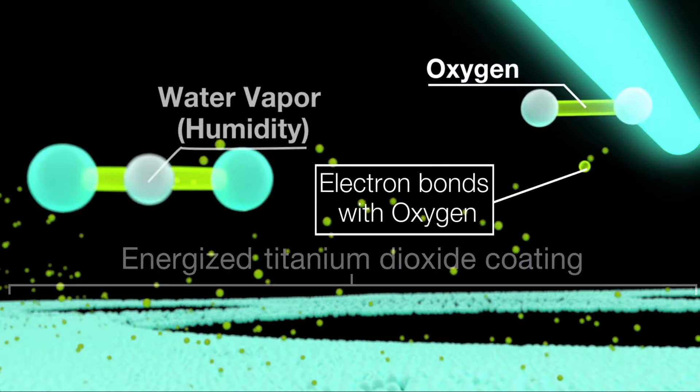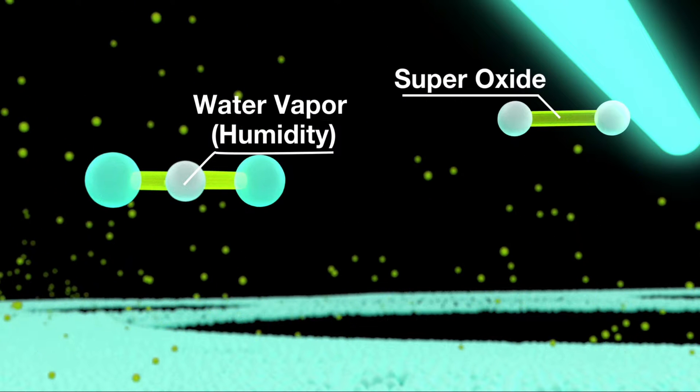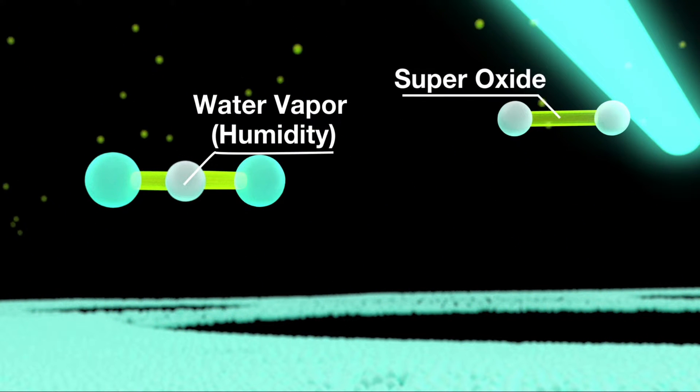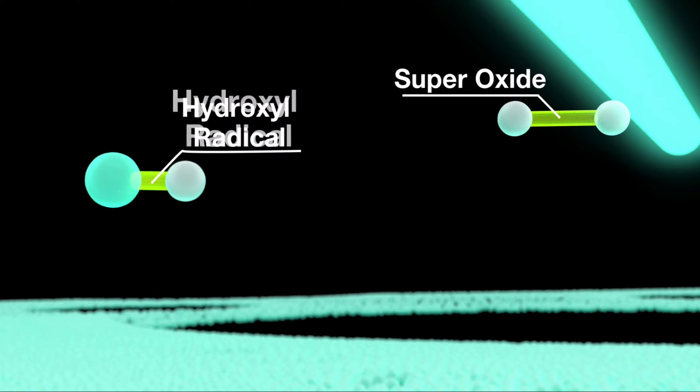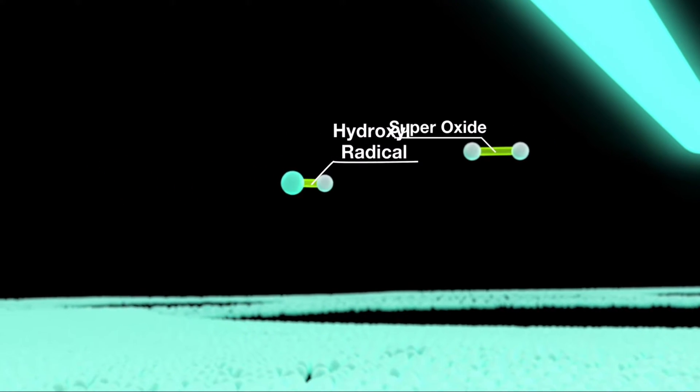The electrons then combine with oxygen to create what are known as super oxides. The titanium dioxide then collects replacement electrons from moisture in the air to become charged particles known as hydroxyl radicals.